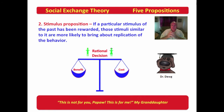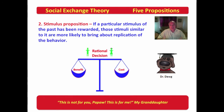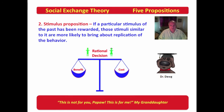The stimulus proposition says if a particular stimulus in the past has been rewarded, stimuli similar to it are more likely to bring about replication of the behavior. This differs from the success proposition in that it is not the same stimulus being repeated, but a stimulus similar to one that has been rewarded. Just by being in the ballpark with the stimuli, the action can be replicated, because the human supposes the same behavior will occur since the new stimuli resembles the old.